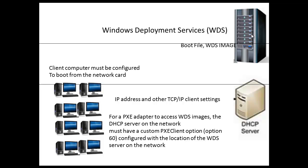And once that client machine finds that server and contacts it, the image can then come down to the client computer and the operating system installation process will begin. Don't forget that the client computer has to be able to boot from the network card, and you actually have to go into the BIOS of the computer and configure the network card to be the first boot for that computer.